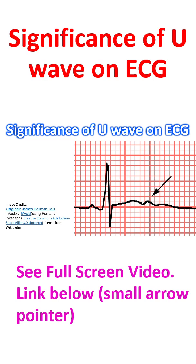Important conditions associated with U waves are systemic hypertension, aortic and mitral regurgitation, and coronary artery disease.